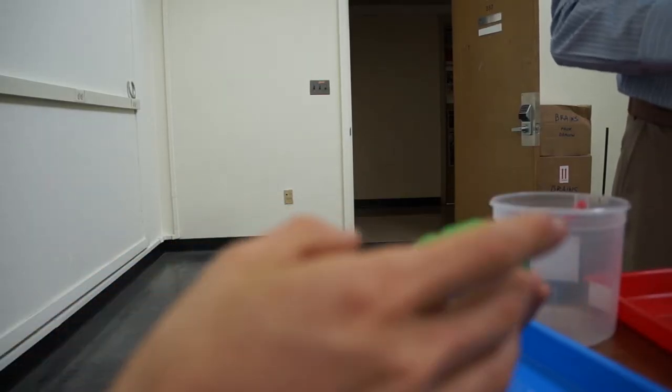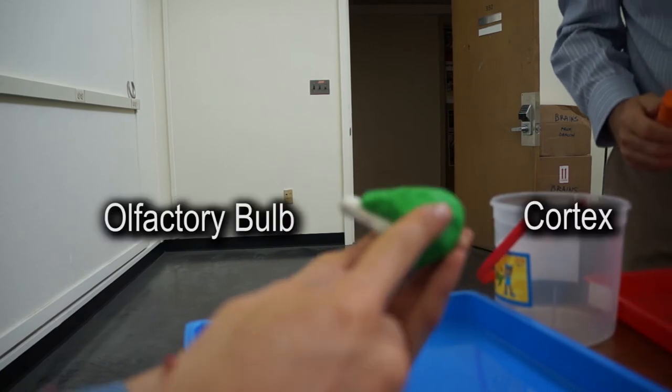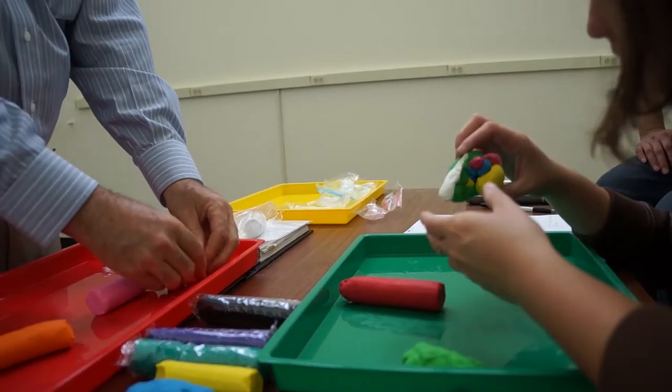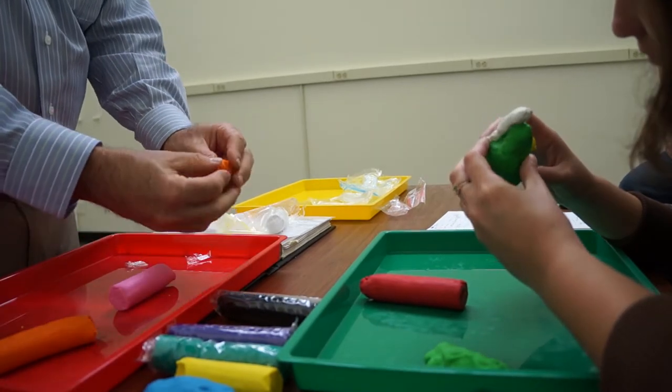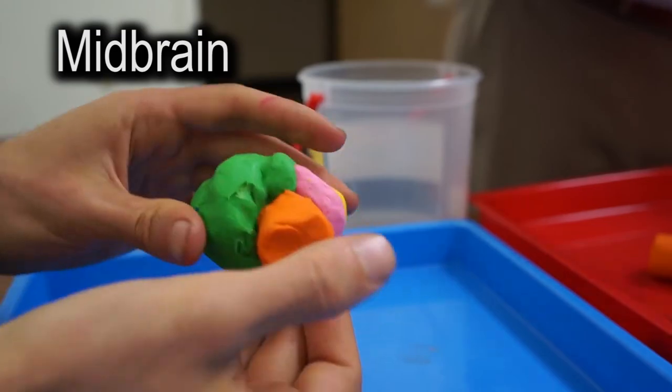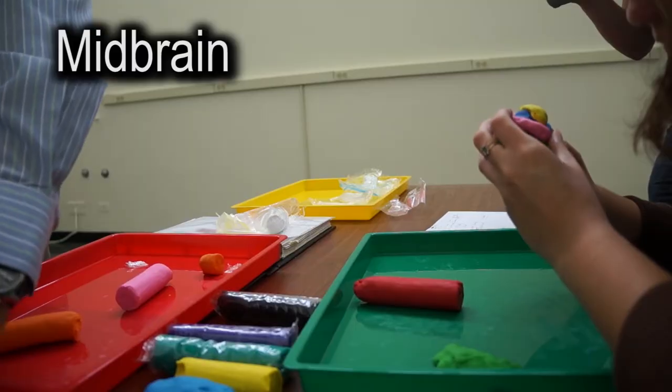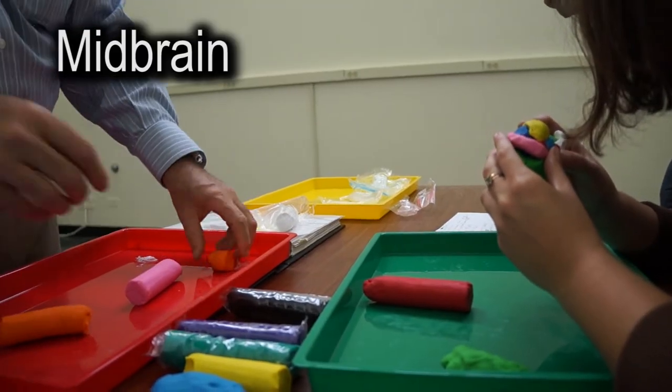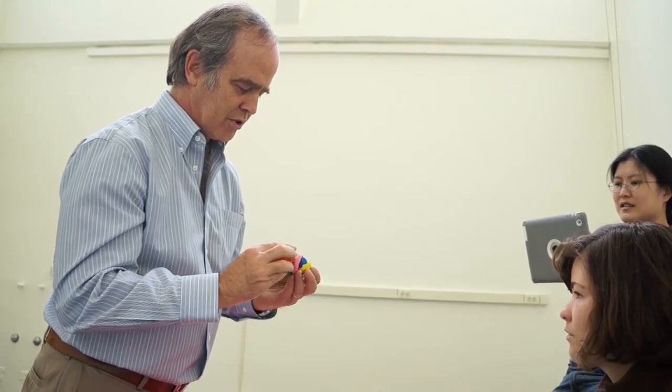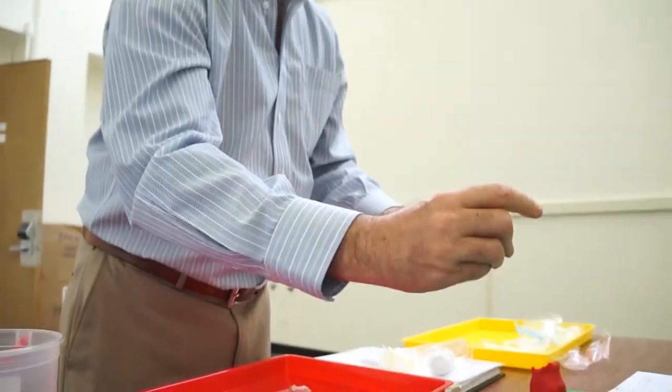Here we've got cortex, and there's the olfactory bulb. The midbrain is going to be just a little thing like this. Time to attach the midbrain. Midbrain goes here. Very simple cylinder, but then we're going to do something to the cylinder. What are we going to do? Put bumps on the back of it. The membrane is going to go in here, so I'll squeeze it a little bit.